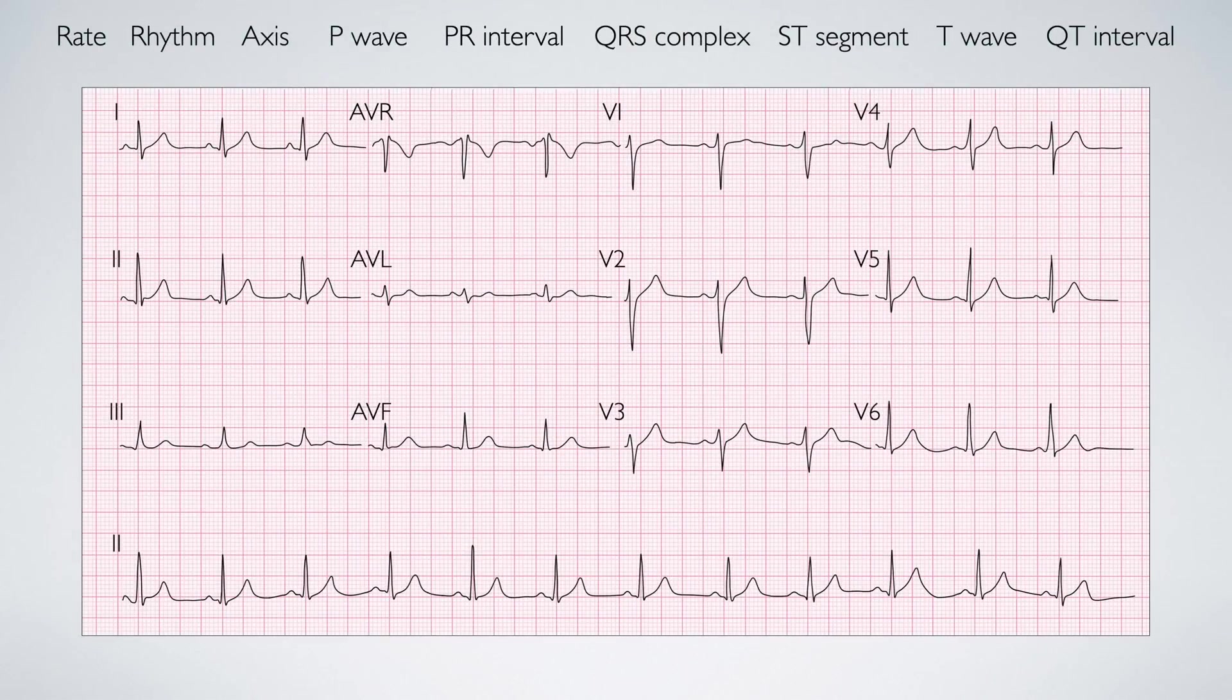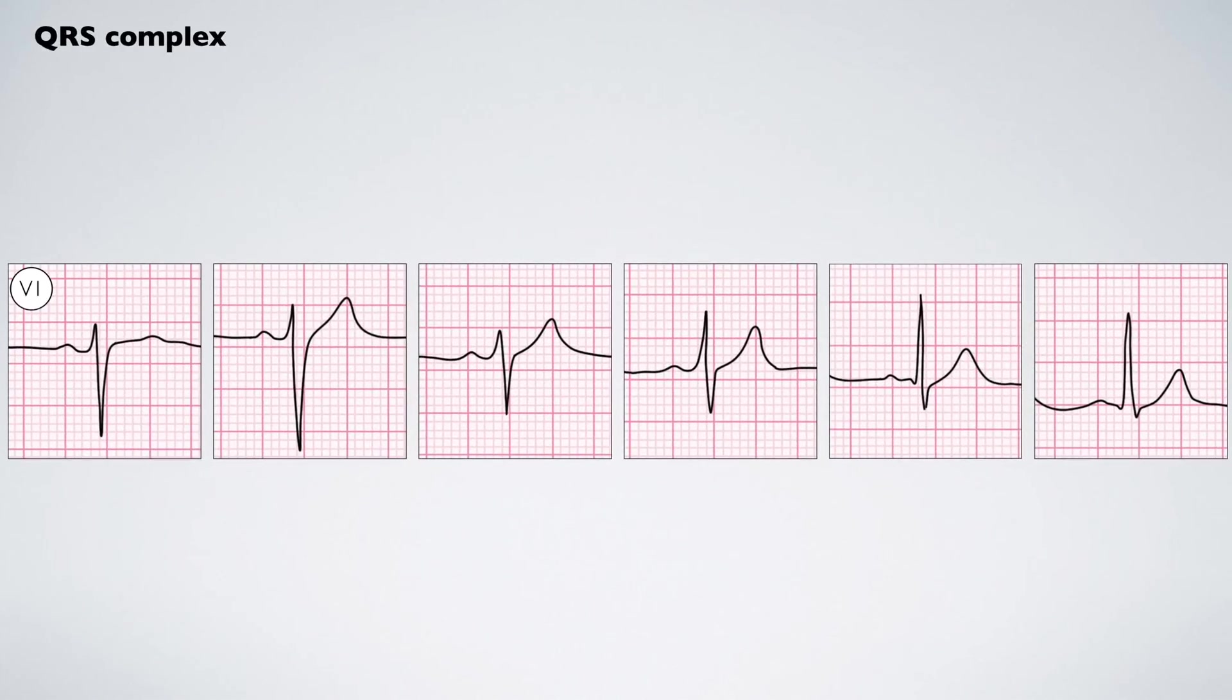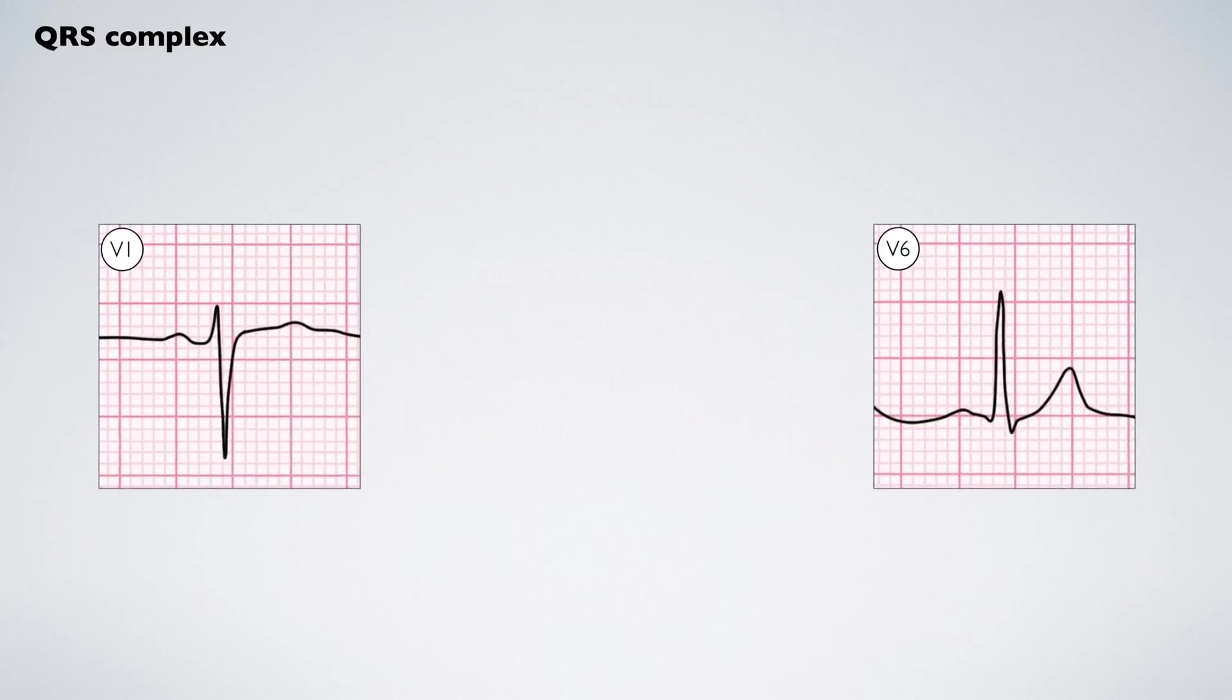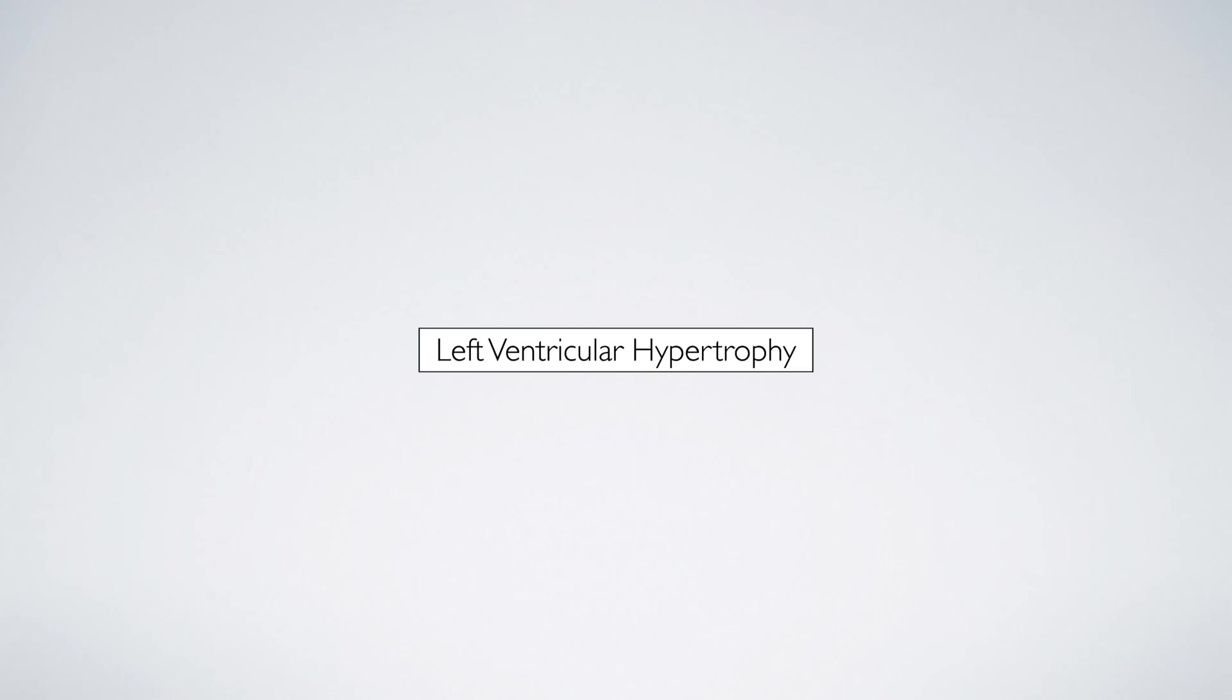Next we look at the QRS complexes. The QRS complex represents ventricular depolarization. Quickly review the QRS complexes in leads V1 to V6. The complexes should be narrow and less than 3 small squares in duration. Under normal circumstances, the R-waves generally become bigger as we move from leads V1 to V6, and the S-waves become smaller. This is known as good R-wave progression. Let's look at some diagnoses. To do this, we'll focus on V1 and V6.